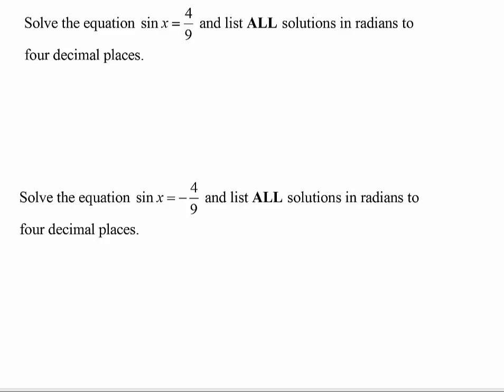We want to solve the equation sin(x) = 4/9 and list all solutions in radians to four decimal places. As we think about this, the first thing I'm going to do is take the sine inverse of both sides, and that would leave me with x = sin⁻¹(4/9).